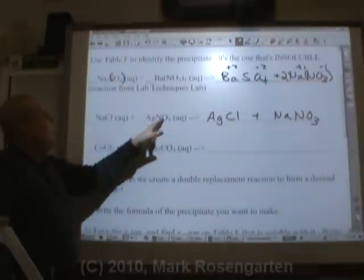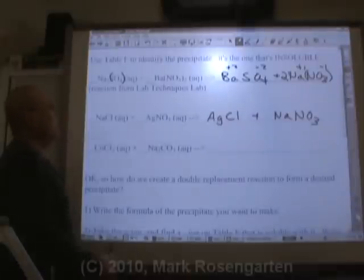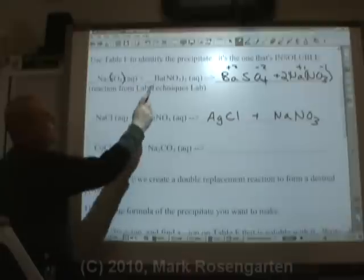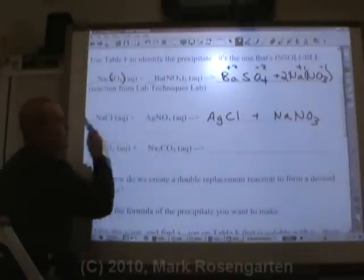Similarly, negative and negative can't attract. They repel. The only thing that can happen is the positive ion of this compound bonds with the negative ion of the other compound and vice versa.